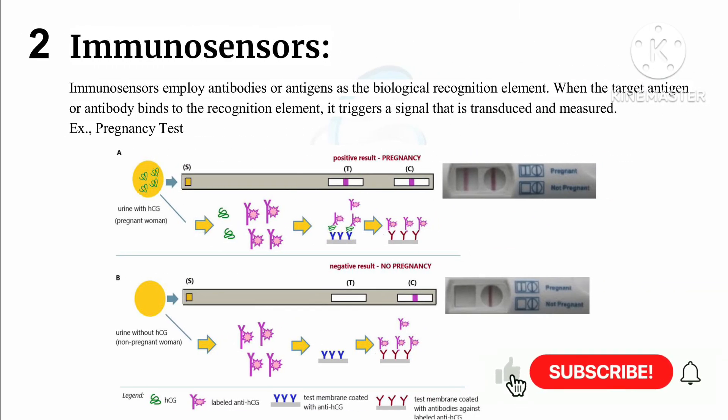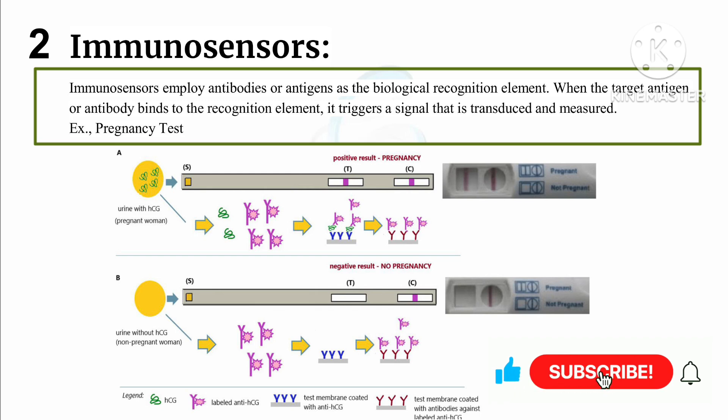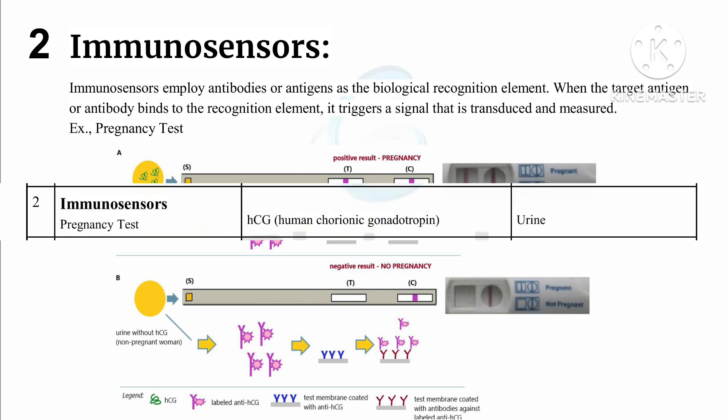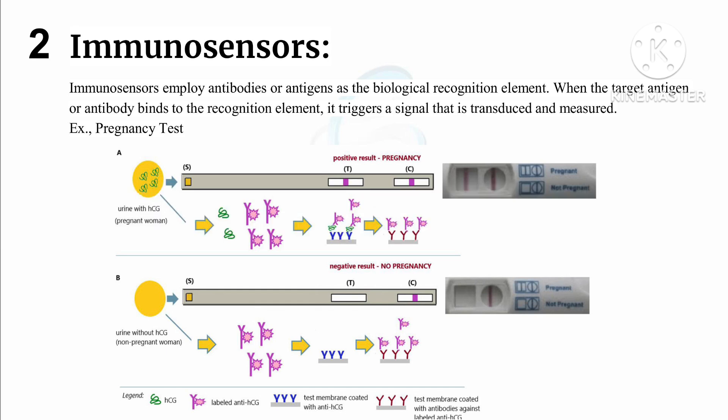Second, immunosensors. Immunosensors employ antibodies or antigens as the biological recognition element. When the target antigen or antibody binds to the recognition element, it triggers a signal that is transduced and measured. An example is the pregnancy test, where HCG — human chorionic gonadotropin — which is a hormone acting as a protein, is the biological recognition element, and urine is the analyte.